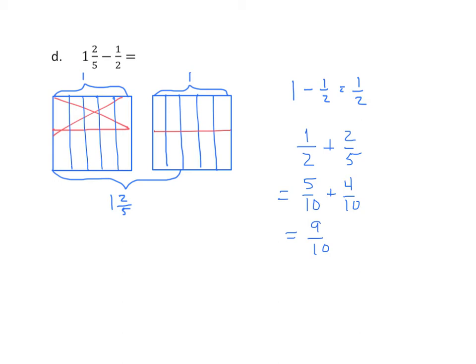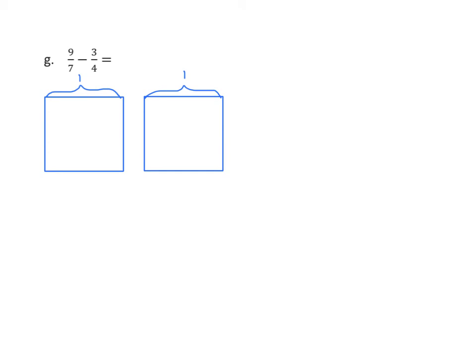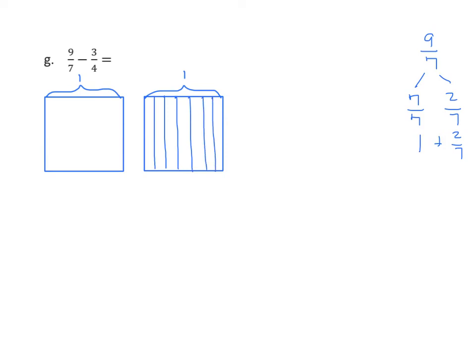We'll do one more example using a fraction where the numerator is greater than the denominator. We have 9 sevenths. Let's decompose that: 9 sevenths can be decomposed into 7 sevenths and 2 sevenths using a number bond, and 7 sevenths equals 1. So we have 1 whole and 2 sevenths. I need to partition my second rectangle into 7 equal parts, then bracket the 1 whole and 2 of these sevenths, labeling 1 and 2 sevenths. Now I'm going to take 3 fourths from the whole.